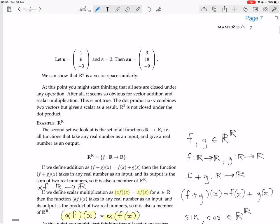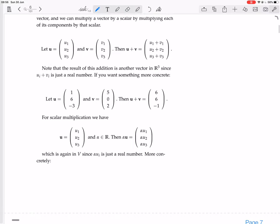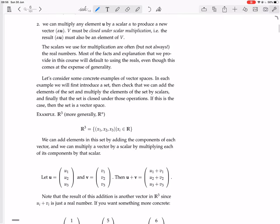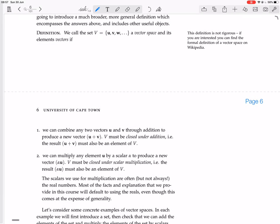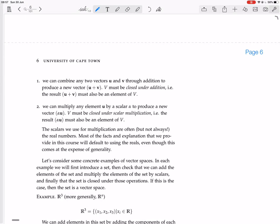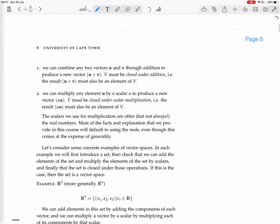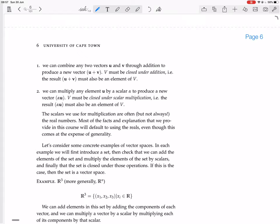I mean, often we thought of vectors as things in R³, like these ones I'm looking at now. But if we go back to the definition we had of a vector space, we call the set the vector space and call those things vectors if we can combine any two vectors through addition to produce a new vector. It's closed under addition.